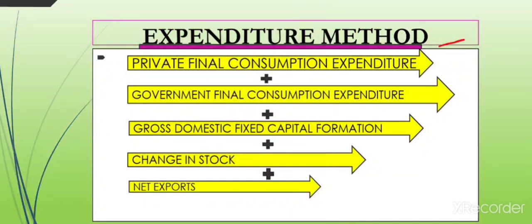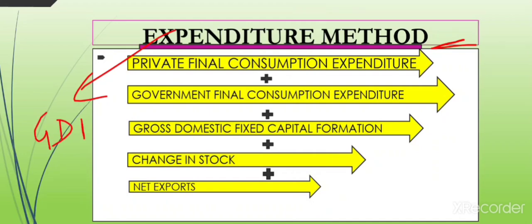First, we will talk about how the expenditure method measures national income. Everyone will ask: how can we measure national income from expenditure? It is simple — expenditure for one person is income for another. For example, when you buy something from a shopkeeper, your expenditure becomes the shopkeeper's income. So in our domestic territory, if we add up all the expenditures of everyone, we will be able to find national income. The first step is to calculate GDPMP.